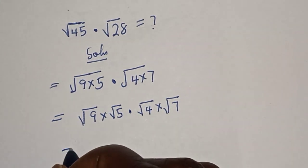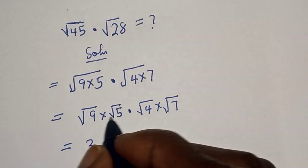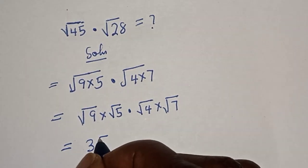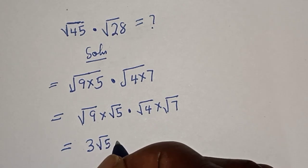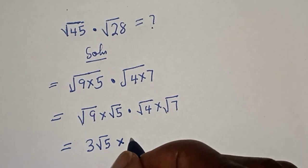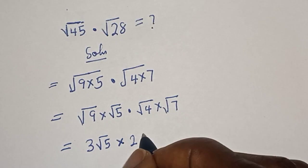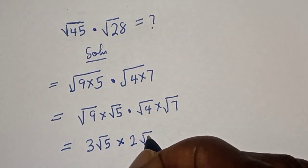Then square root of 9 is 3 multiplied by root 5 times square root of 4 is 2 multiplied by root 7.